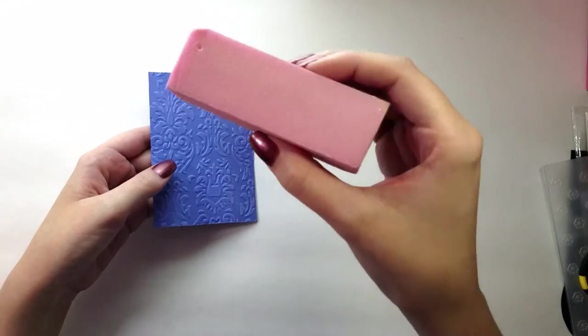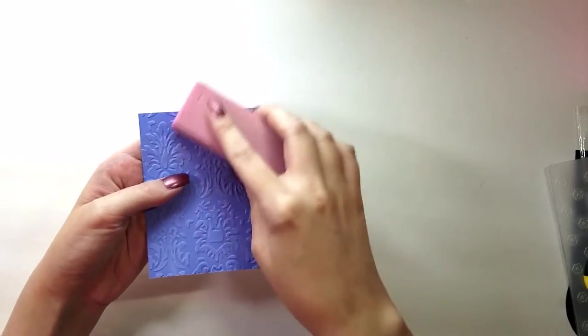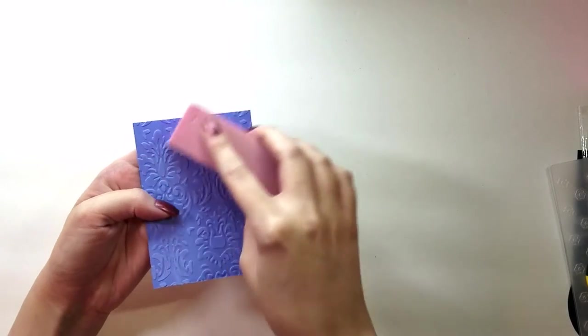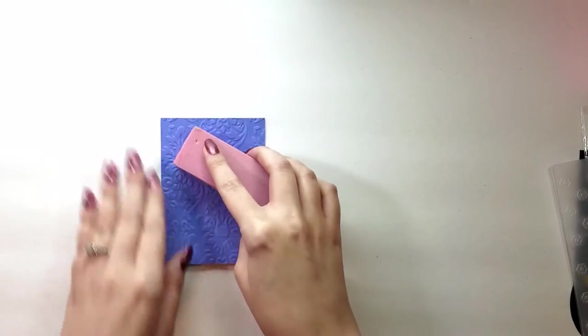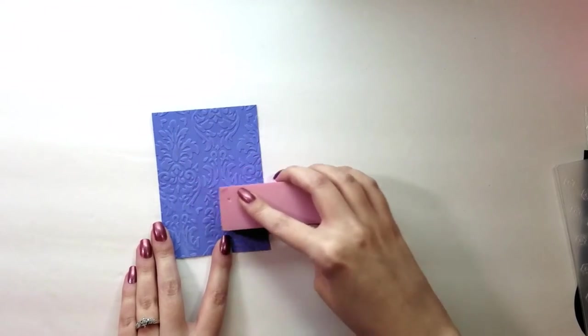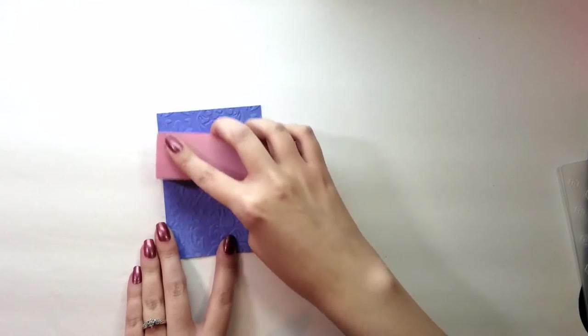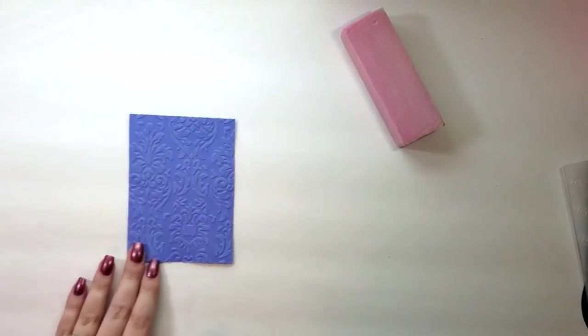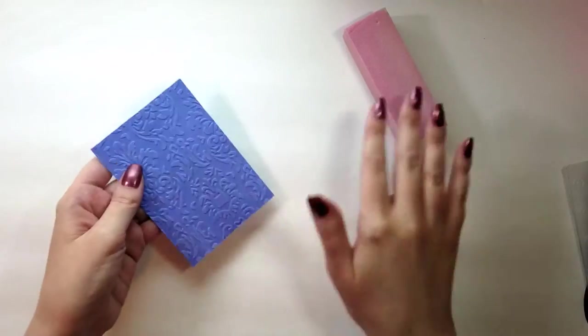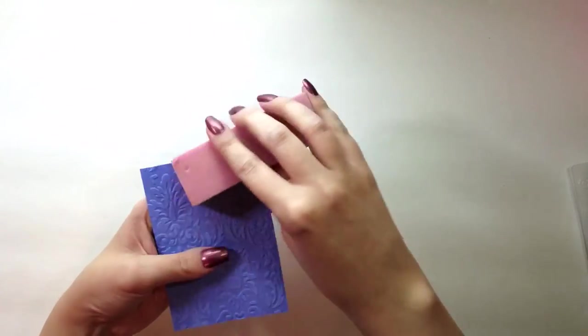And then we will go on and use a really fine grit buffer block, you can just use one that you would use for your nails, and just lightly go over the surface of the embossing. This is optional, you don't have to do this, but it does add a little bit of an aged look to the embossing. It also seems to make the embossing stand out just a little bit better.